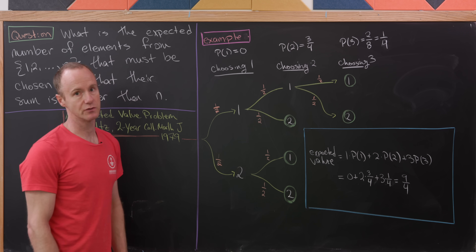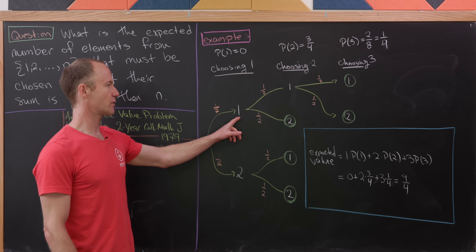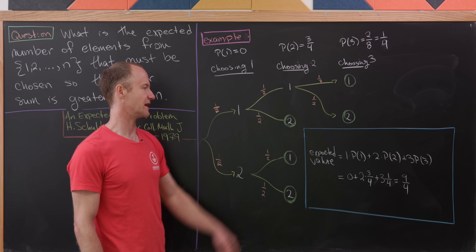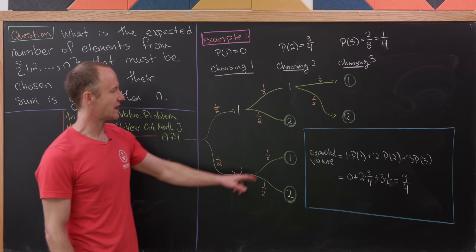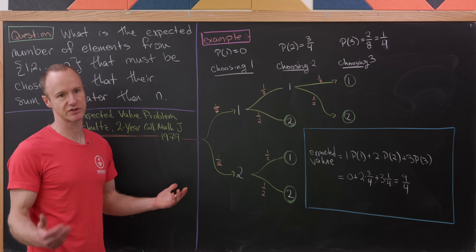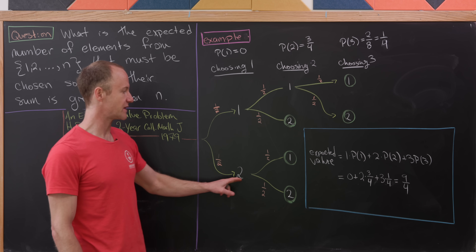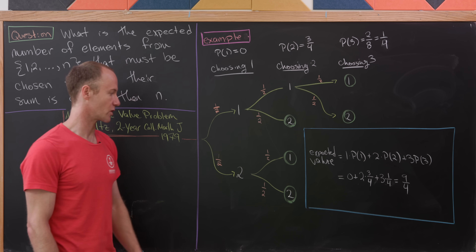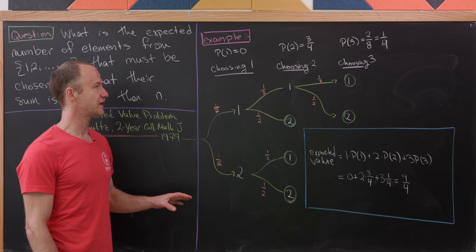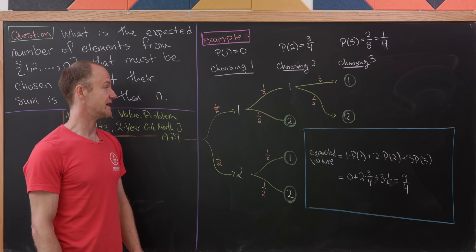So let's say we choose two numbers. If we start with the number one, we've got a probability of one-half of choosing another one and a probability of one-half of choosing two. If we choose the two, we achieve a sum of three, which is obviously larger than two, and we're good to go. Either choice after the initial one gives us a sum of three or four, which is larger than two. Putting this all together, the probability that we need to choose two numbers is three-quarters.